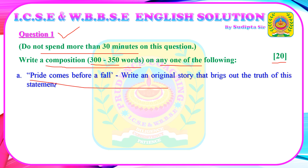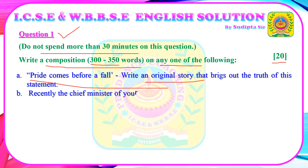Topic 1: "Pride comes before a fall." Write an original story that brings out the truth of this statement. If you choose topic 1, you need to write a single story that is contextually about the given statement — "Pride comes before a fall."